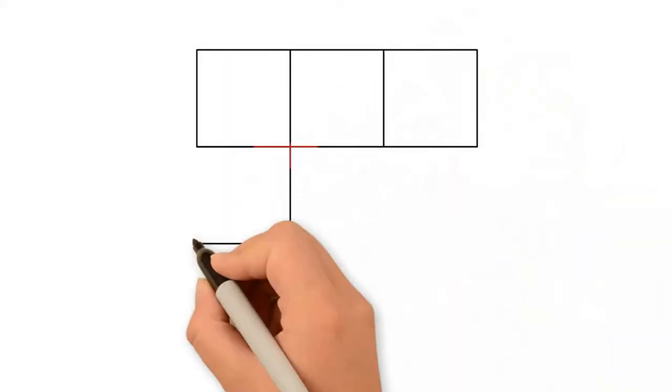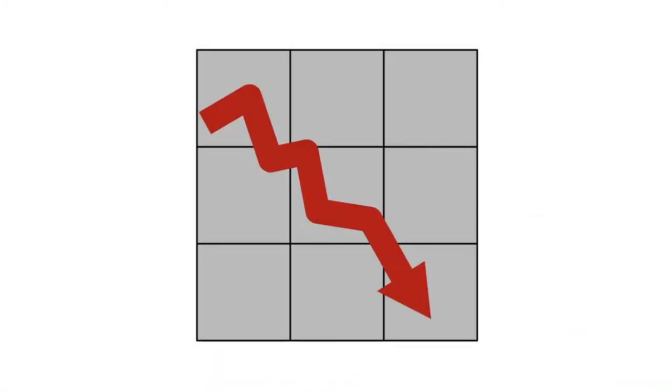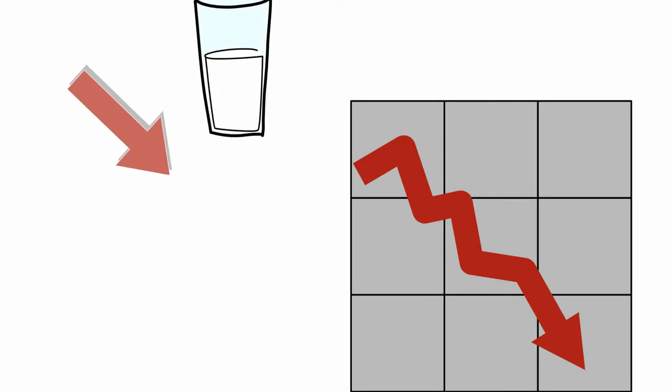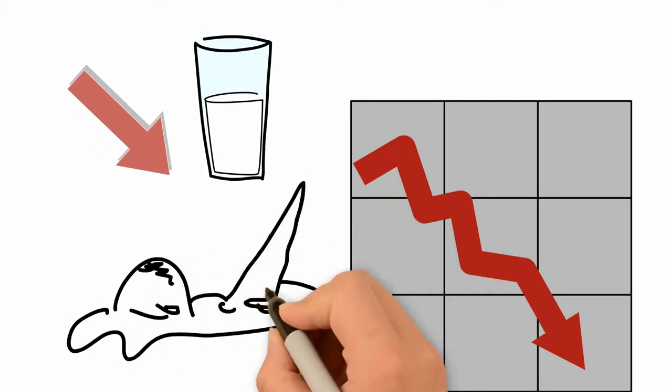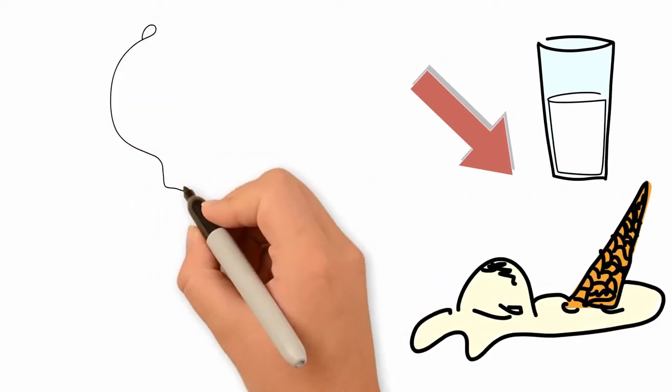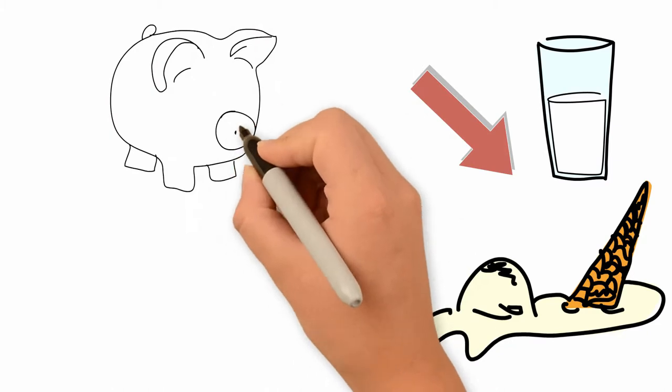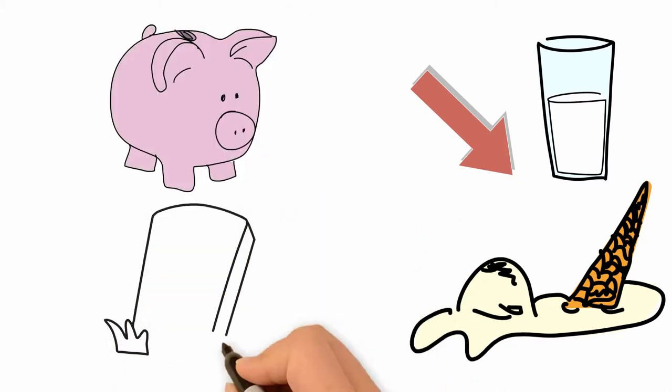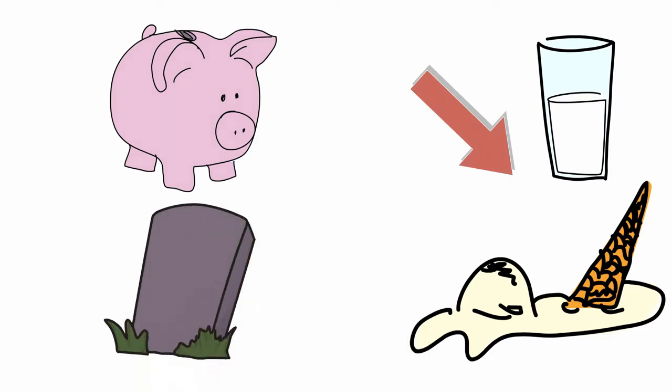Mastitis is also a major source of economic loss in the dairy industry as it results in decreased milk production, losses due to discarded milk deemed unfit for human consumption, decreased yield during milk transformation, increased costs associated with treatment and veterinary visits, as well as mortality or early culling of cows that do not respond well to treatment.